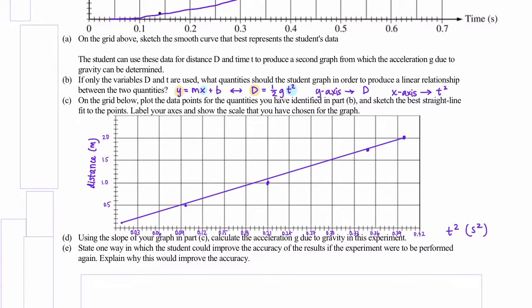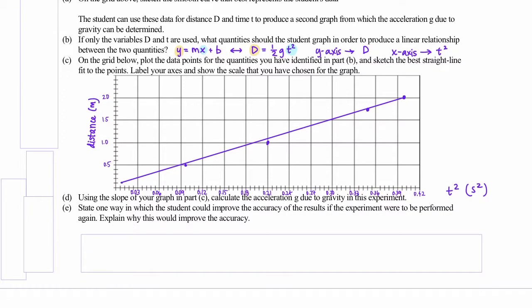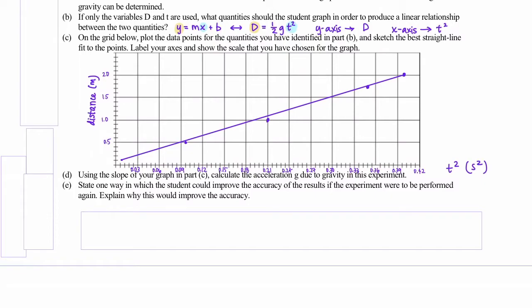Part D, using the slope of your graph in part C, calculate the acceleration g due to gravity in this experiment. So we're going to use our equation that we came up with in part B. So we're using distance equals one-half gt squared. And our slope is m, that's going to be equal to the one-half times g.